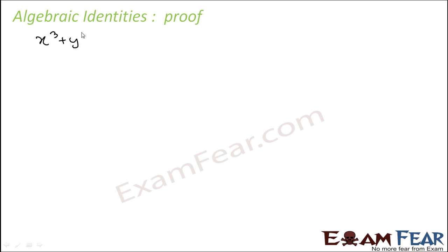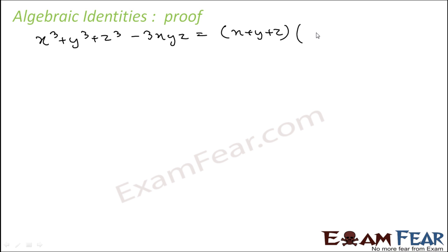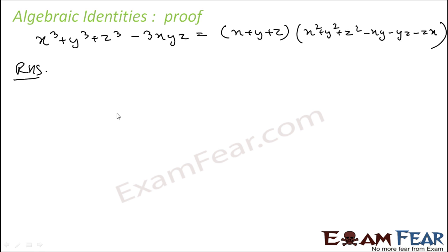So we'll do some proof for algebraic identities. We know that there is an identity: x³ + y³ + z³ − 3xyz, which is pretty important. This equals (x + y + z)(x² + y² + z² − xy − yz − zx). Let's prove this by starting from the RHS and multiplying out.